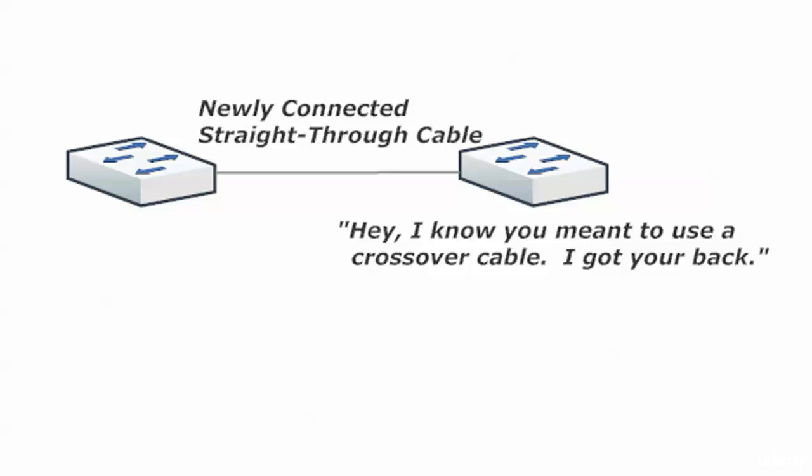Because what happens is, when you connect a straight-through cable in a situation like this between two switches, and if the ports you're connecting to are MDIX enabled, then the port's gonna say, you know what, I know you meant to use a crossover cable here. I'm talking to the other guy, and I can see he's a switch too. He's a like device. I got you back. I'm gonna act like a crossover cable.